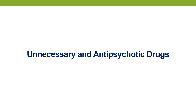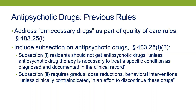Now turning to unnecessary and antipsychotic drugs. The revised requirements of participation changed the regulations for drugs in some very significant ways — some of them are good and some are not quite so good. Until the revision last year, the quality of care regulations addressed drugs in a subsection called unnecessary drugs, which said residents should be free of unnecessary drugs — defined as drugs with excessive dose, excessive duration, without adequate monitoring, without adequate indications for use, or in the presence of adverse consequences indicating the dose should be reduced or discontinued.